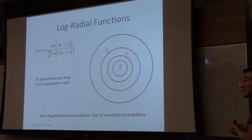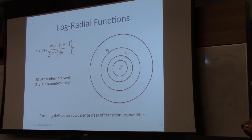This is asymmetric — the direction is not irrelevant. If we learned a single embedding over songs, the transition direction would be almost irrelevant.